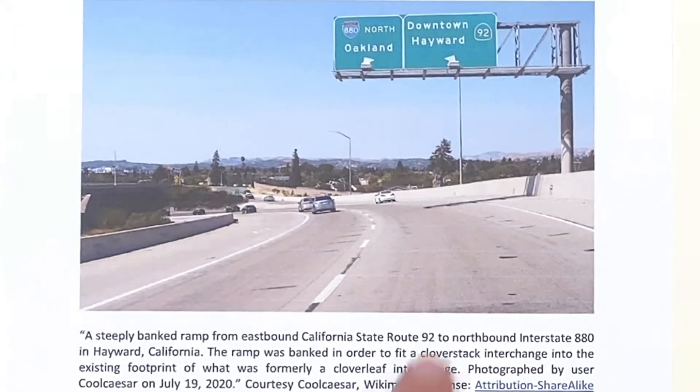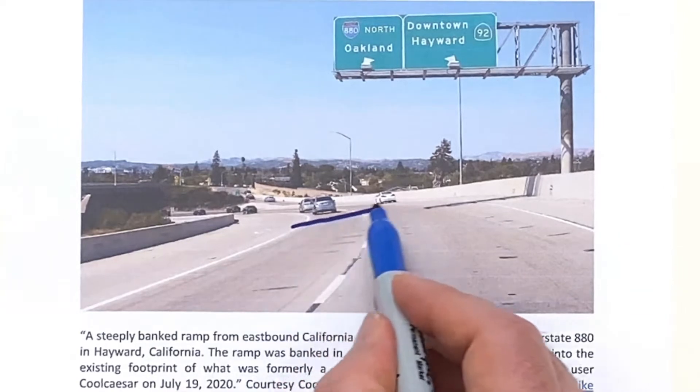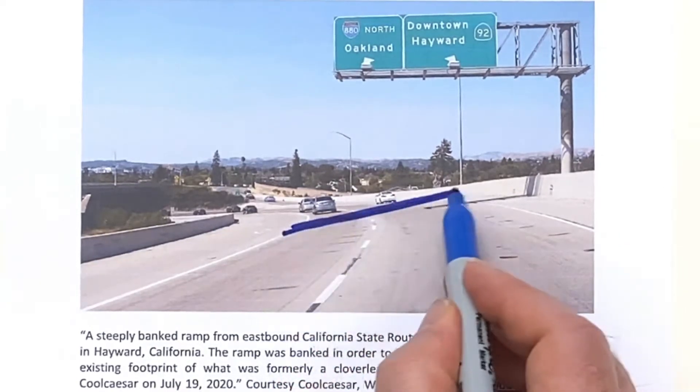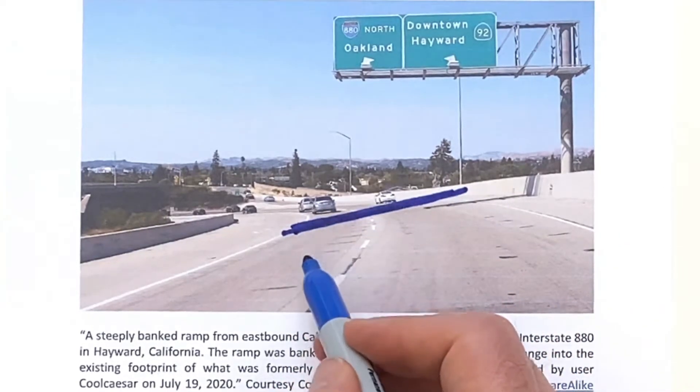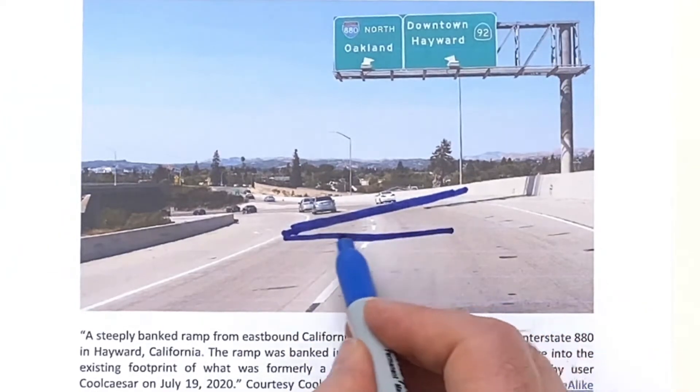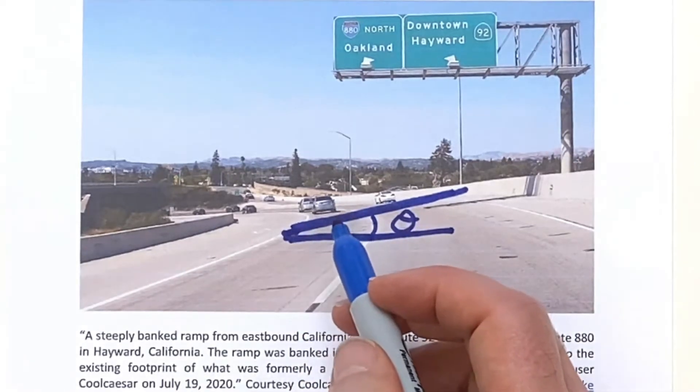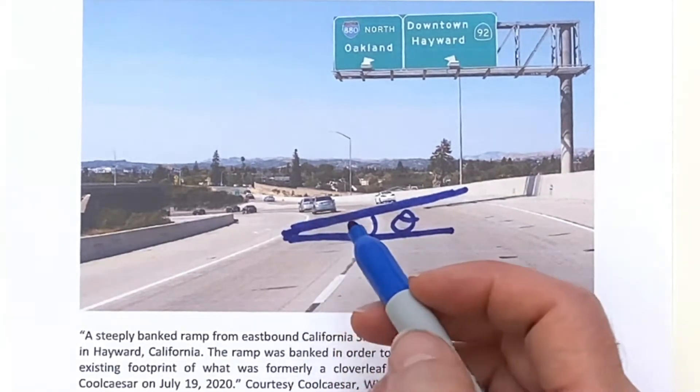But anyway, this gives you the picture of the slant where there is a slant here. And we're going to consider the banked road as having that angle theta. And we're going to work with that to see what we can do.